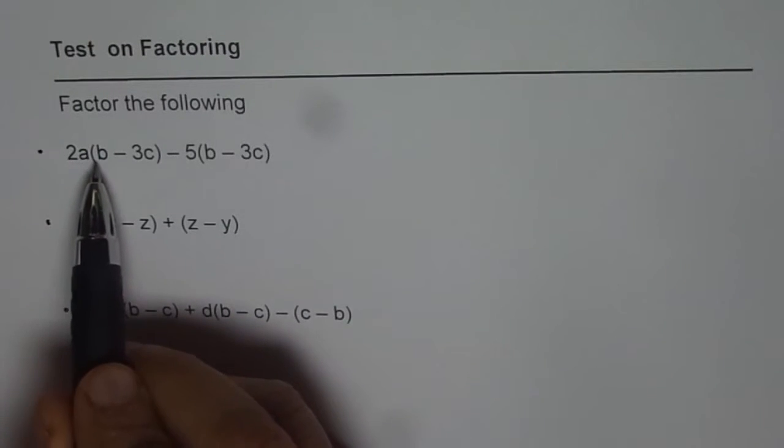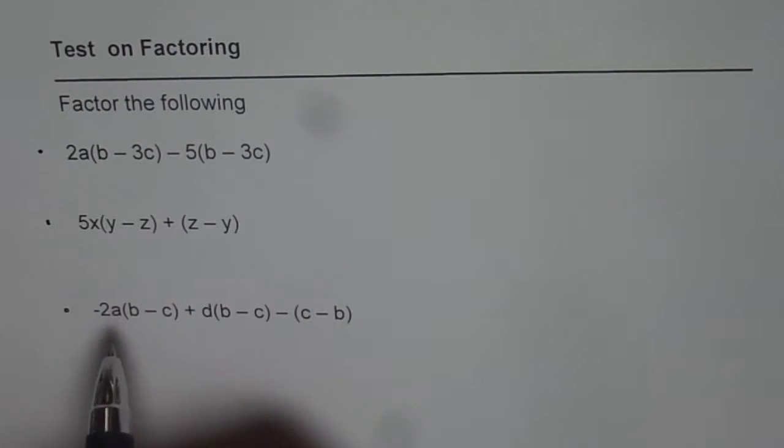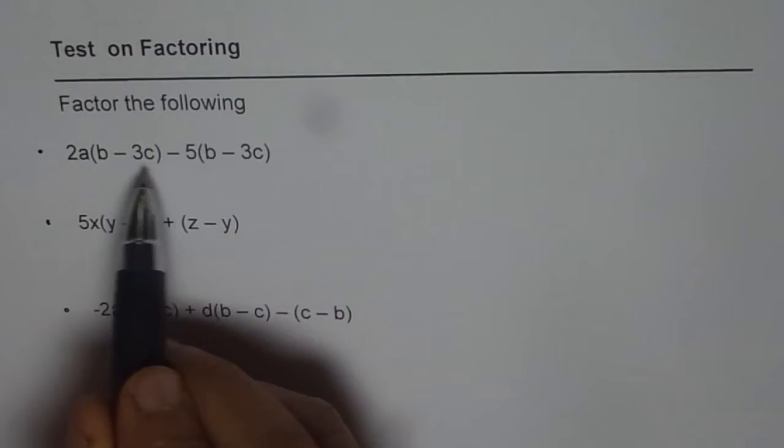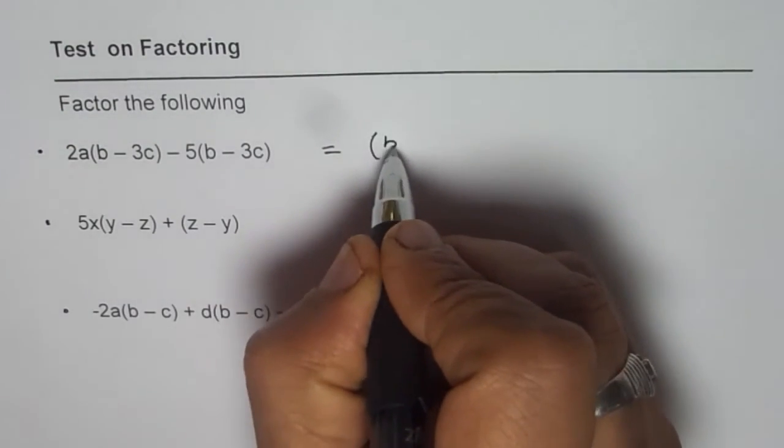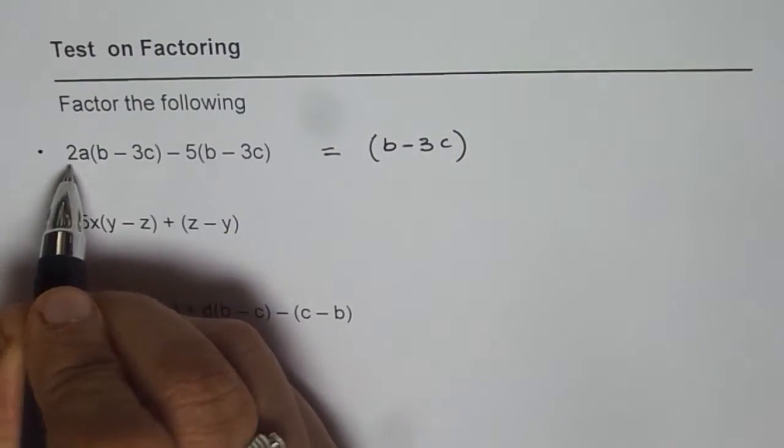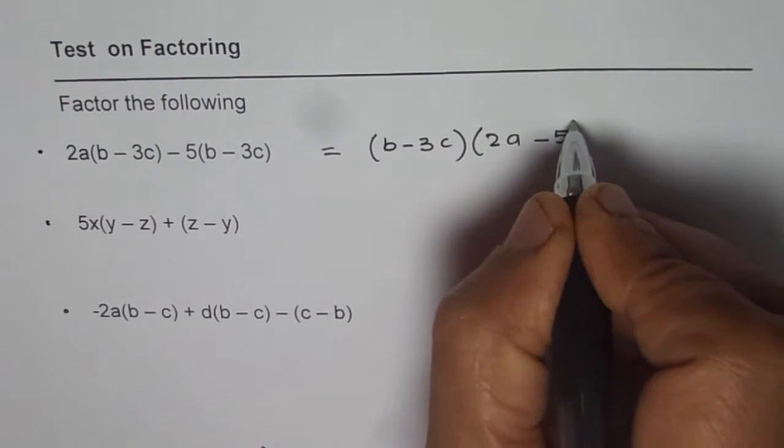The first one is 2a times b minus 3c minus 5 times b minus 3c. Now b minus 3c is a common factor between these two terms. So straight away we can write b minus 3c as common. We are left with 2a from the first term minus 5 from the second.